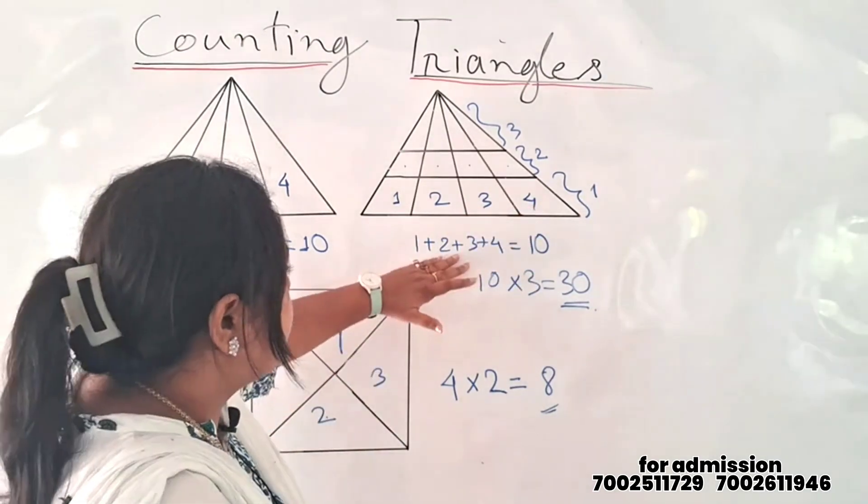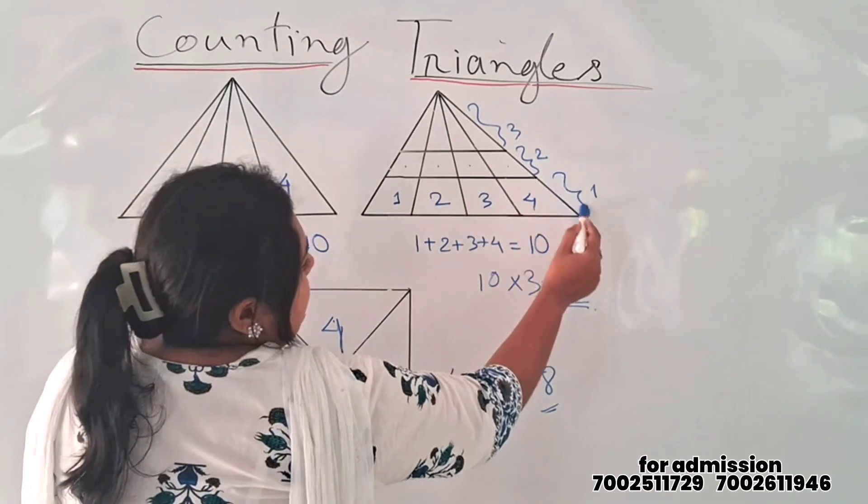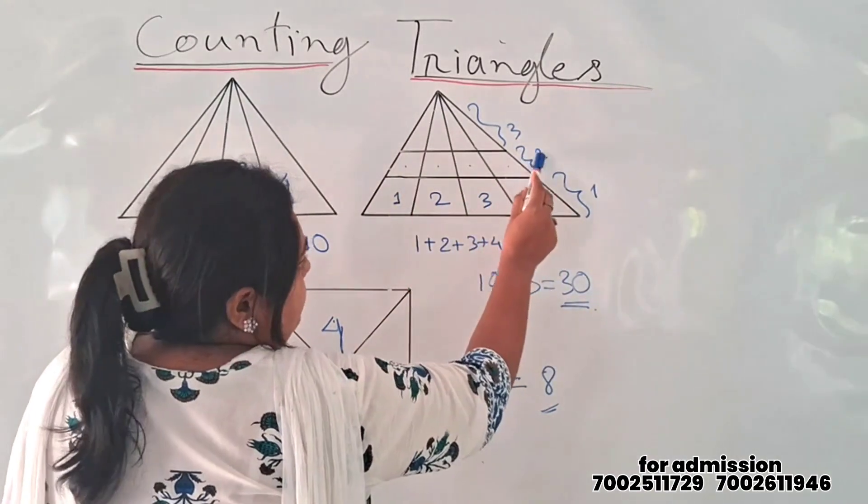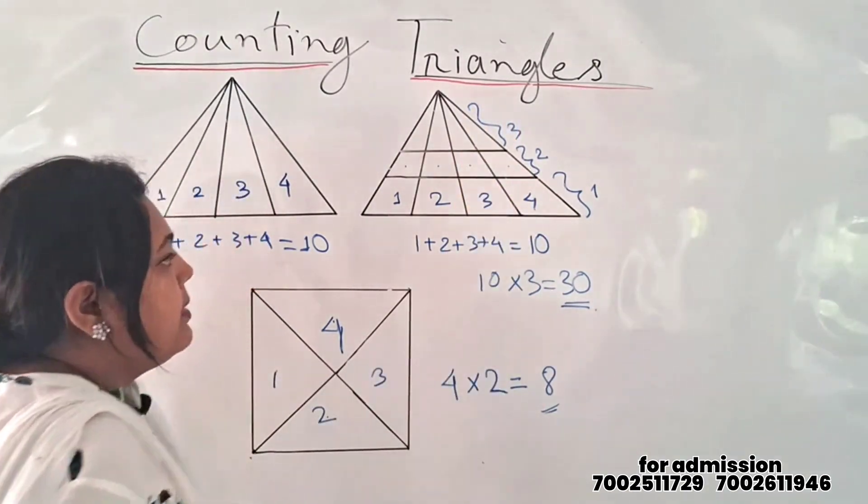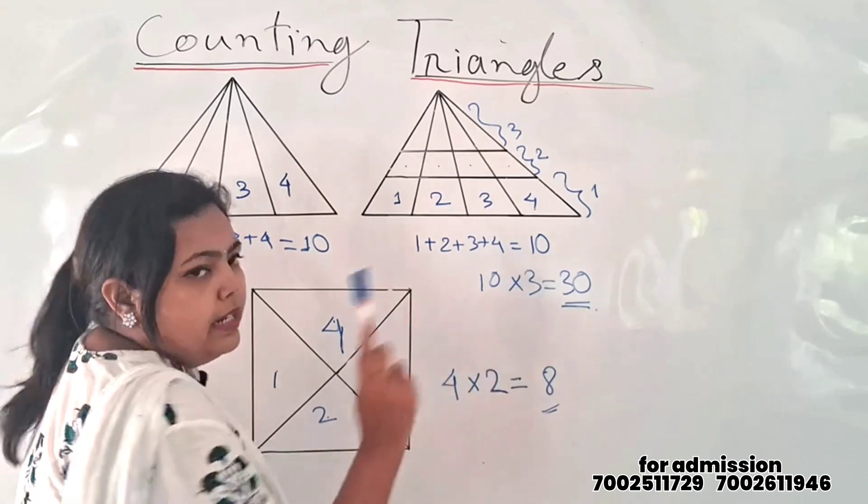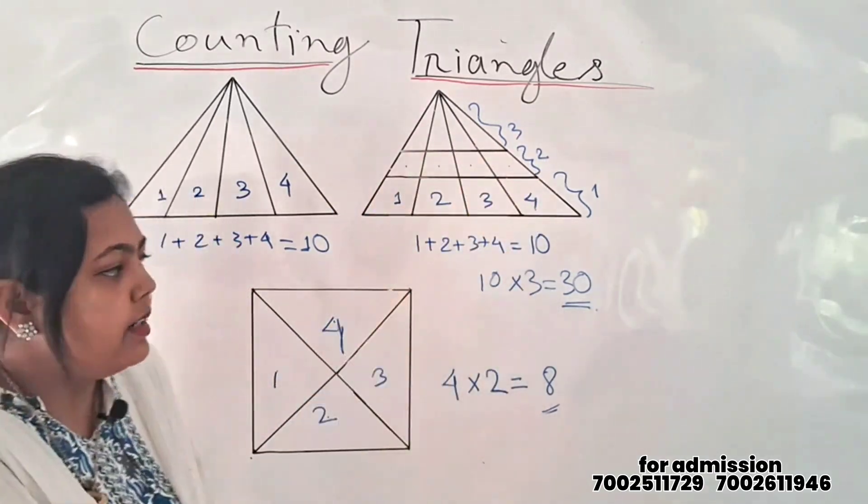This equals 10. We multiply them 1 times 1 and multiply by 3. That's how we define the total triangle number is 30.